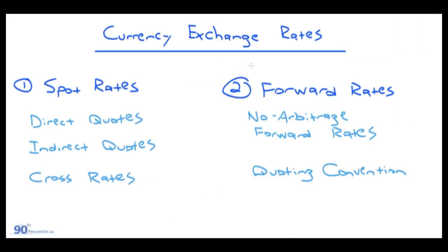Here we're talking about currency exchange rates. The two key topics are spot rates and forward rates. Spot rates are quotes available for trading today, while forward rates are a derivative instrument that can be traded in the future. Key types of spot rates we'll talk about are direct quotes and indirect quotes.